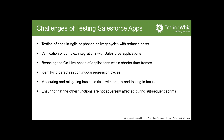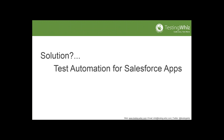Reaching GoLive with shorter timeframes and identifying defects in continuous regression cycles is of high importance. Any test or release manager would agree that a defect left out in a regression cycle can increase the cost of those defects over time, and fixing them can be very tedious. Measuring and mitigating business risks with end-to-end testing is critical — it's important that you not only test your complete regression but also test your end-to-end business scenarios and ensure risks are covered.